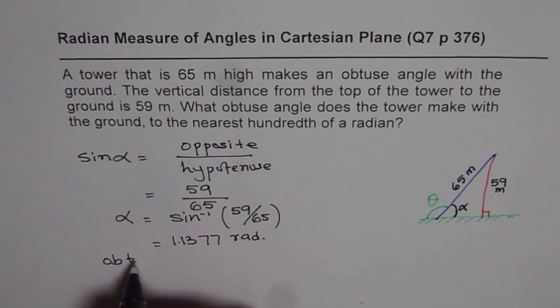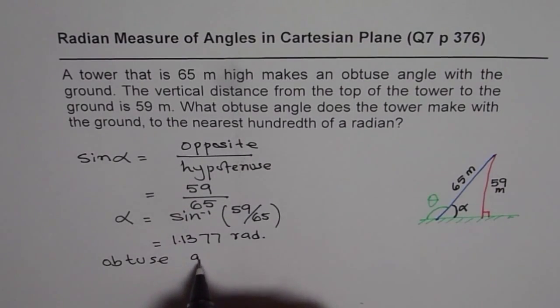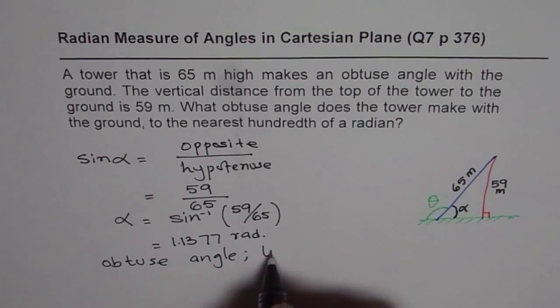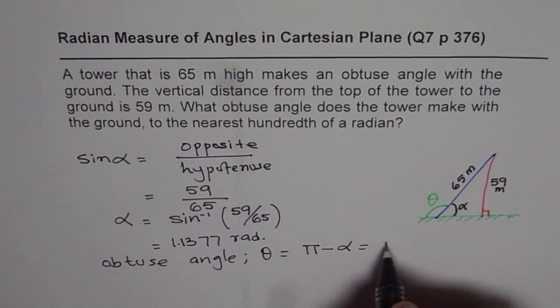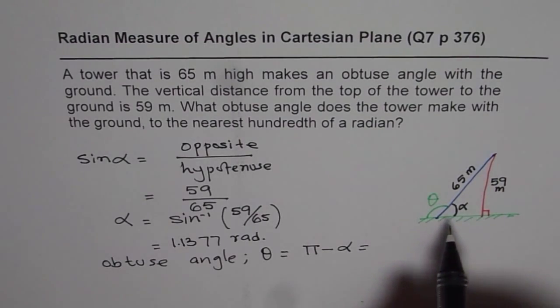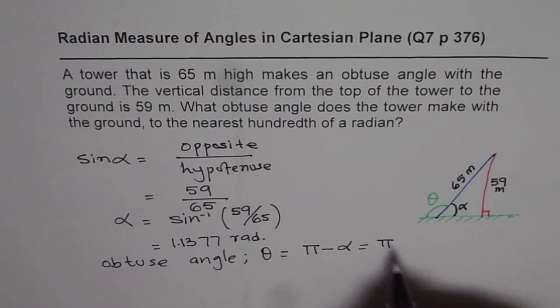So the answer required is obtuse angle which in our case is theta. That should be equal to pi minus alpha. You could use 3.14 since nearest hundredth is required, but we will use the exact value of pi, whatever we get from the calculator.